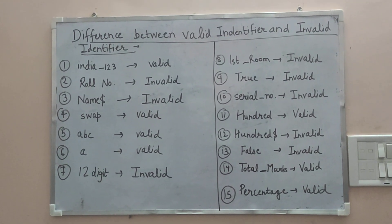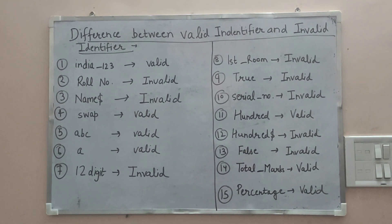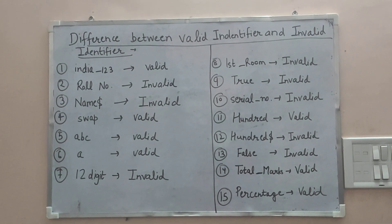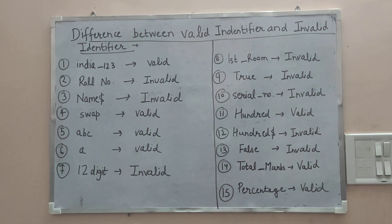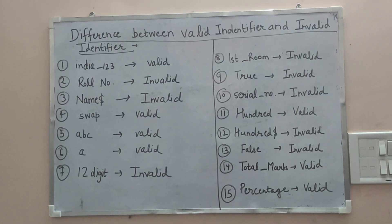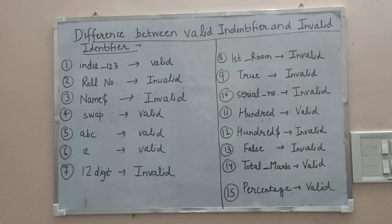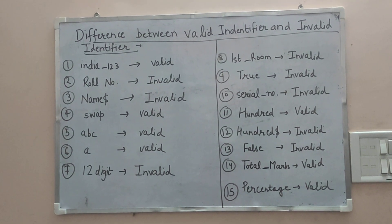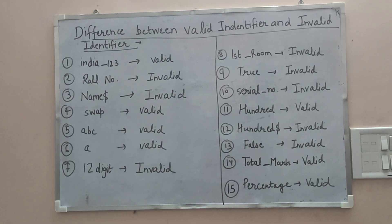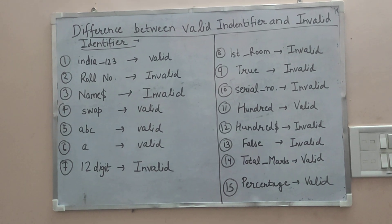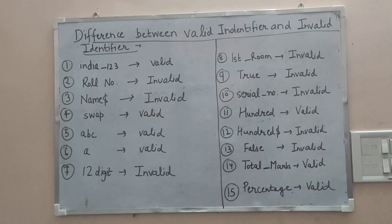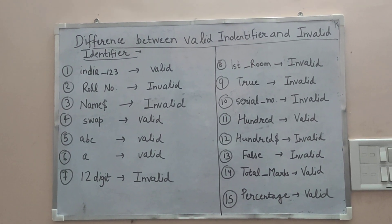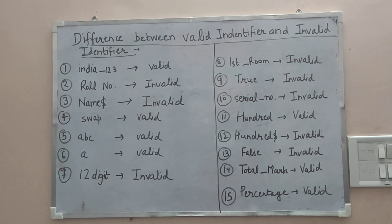The third is `name$` — the dollar sign or exclamation mark is a special character, so this is invalid. The fourth is `swap`, which is valid because it contains only characters — no special characters. We can use just alphabets, which also qualifies as a valid identifier.